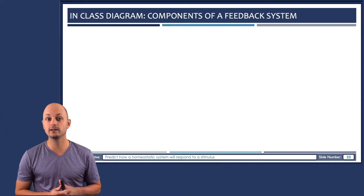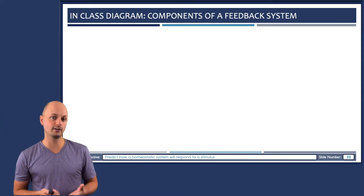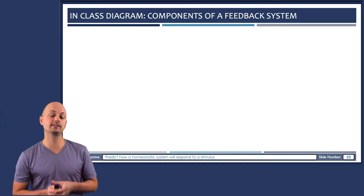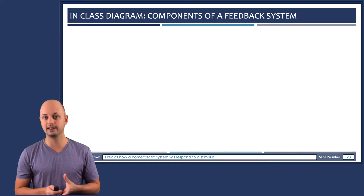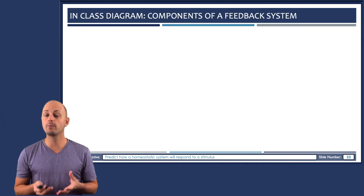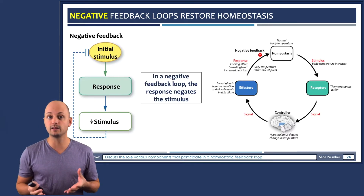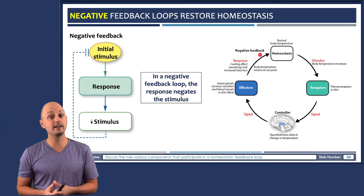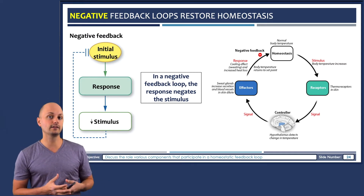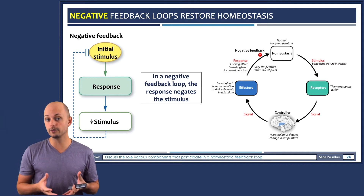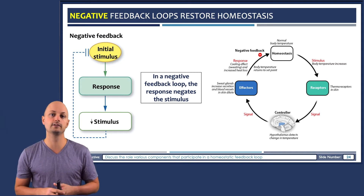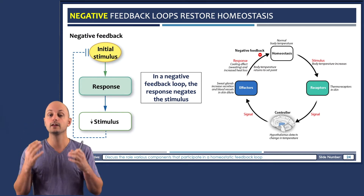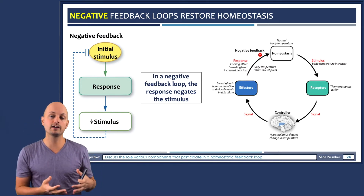Homeostasis is maintained through a process called negative feedback. When some biological parameter like body temperature fluctuates too far away from the set point, it creates a stimulus. A stimulus can get detected by a receptor, which is usually part of the nervous system, and then it will get sent to a controller like your brain. Later on we'll call that whole process sensation.